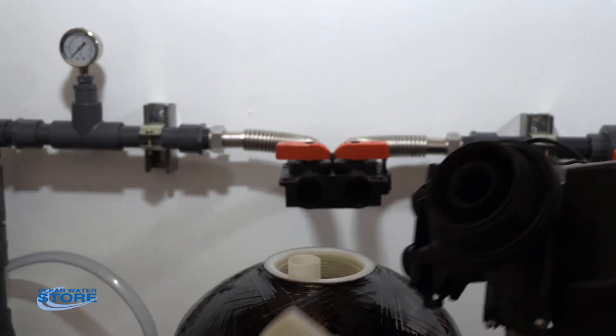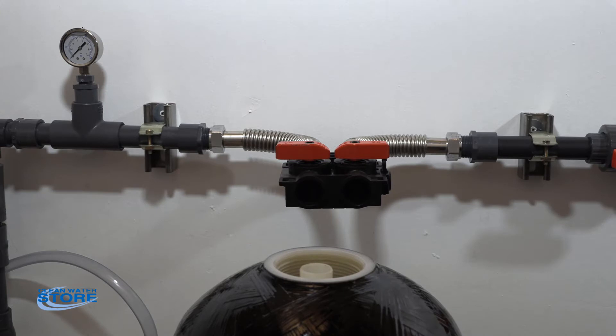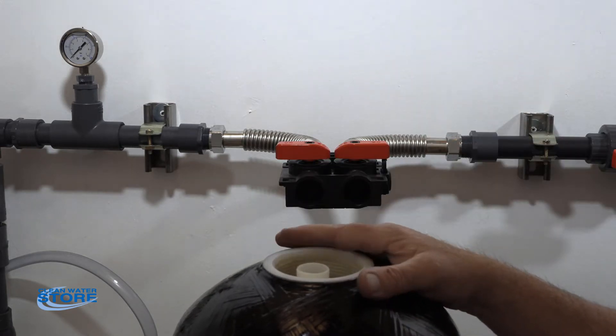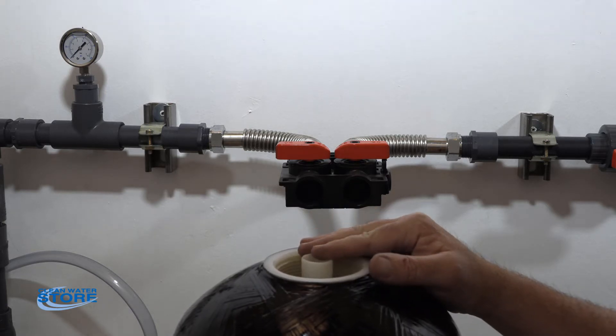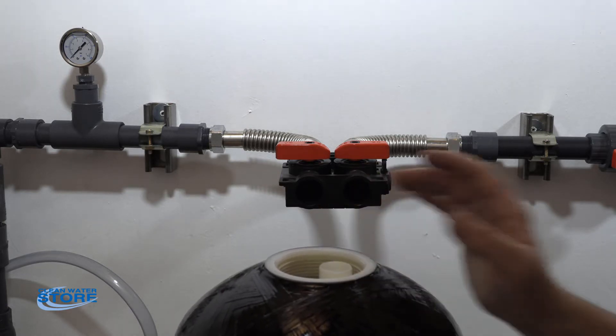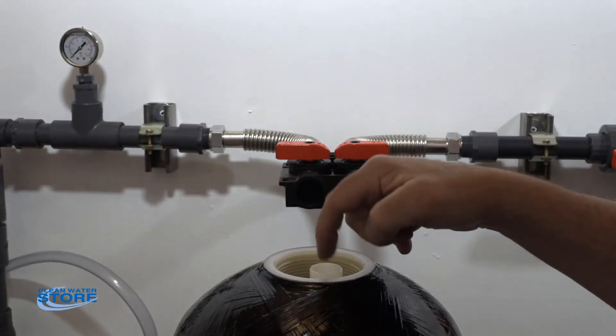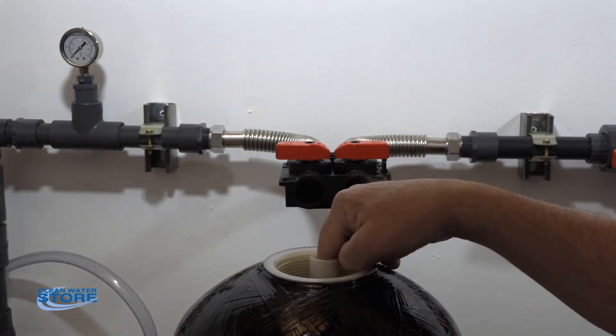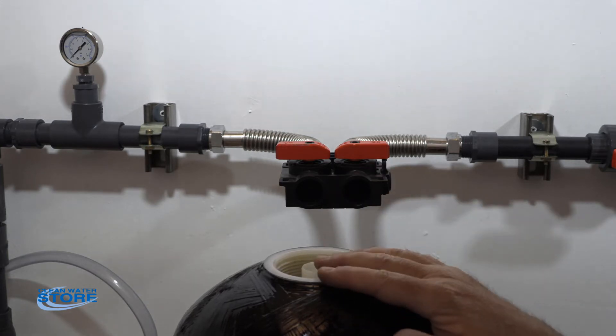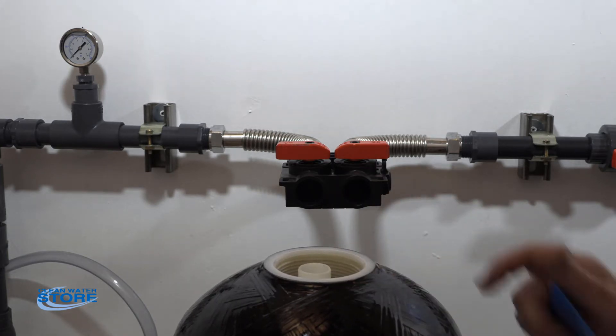We're basically going to dump the media that's in this tank out on a tarp to reduce the weight. The first thing we're going to do is go ahead and use something like a siphon pump or a siphon hose. Go down the D-tube as far as you can, all the way to the bottom, and go ahead and siphon as much water as you can out.